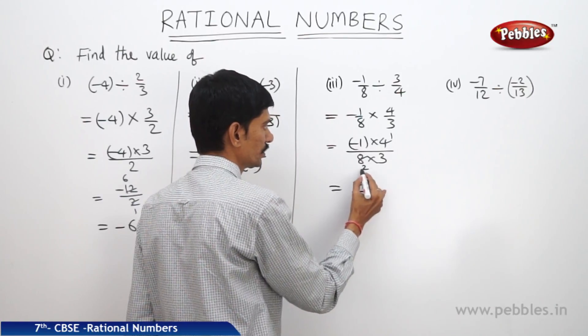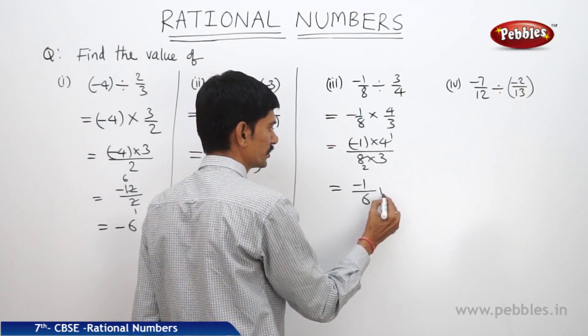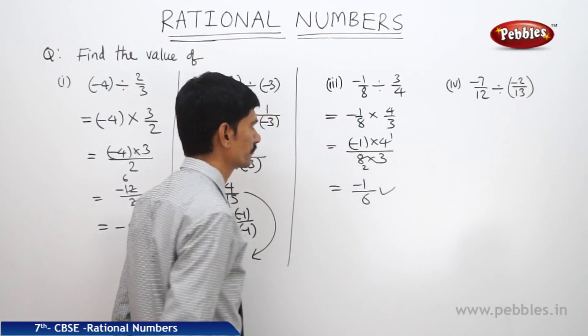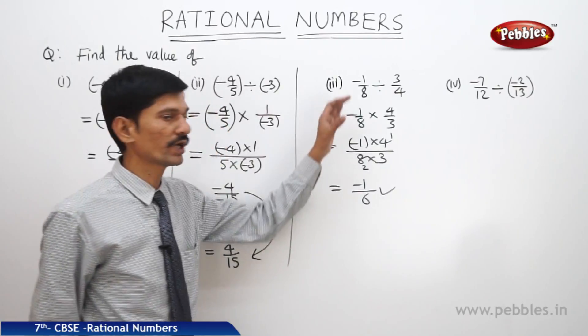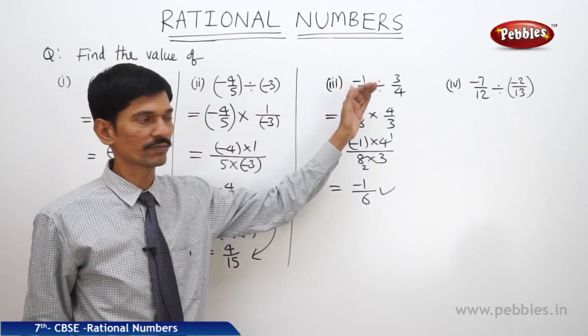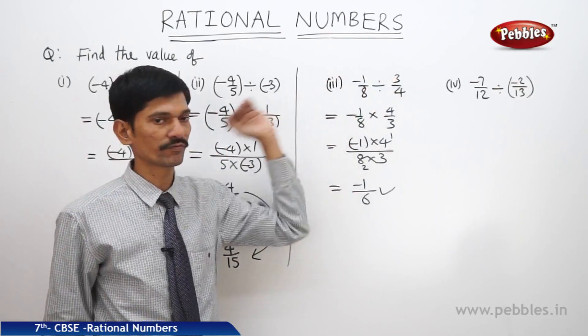So the result is minus 1 by 6. This is the quotient when we divide minus 1 by 8 by 3 by 4.